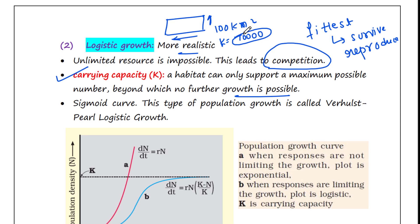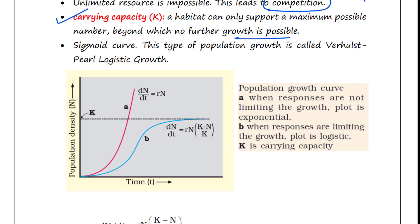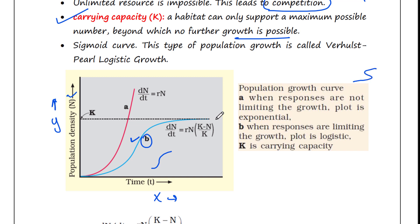If we plot N on the y-axis and time T on the x-axis, in this case we get a sigmoid curve — an S-shaped curve. This type of population growth is called logistic growth. We can see that initially there is a lag phase where population growth is slow, since initially we have few individuals.